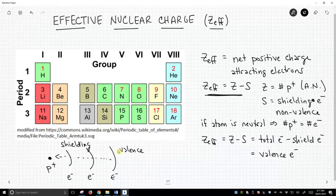We know how to determine the valence electrons. We just simply look at the group number on the periodic table. So if we know the number of valence electrons we have, we also know the effective nuclear charge.